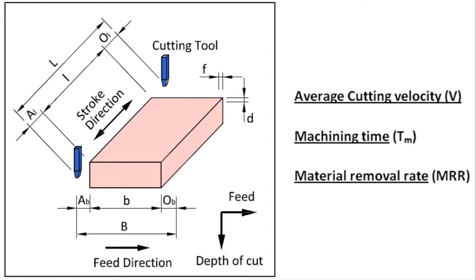The width of the workpiece is shown as small letter b, and the total distance through which the workpiece moves in the feed direction is capital letter B — the sum of approach in the width direction, width of the workpiece, and over travel in the width direction. The direction of feed is always perpendicular to the direction of stroke and also perpendicular to the direction of depth of cut. The stroke direction, feed direction, and depth of cut are three mutually perpendicular parameters. Depth of cut (small d) is the distance through which the cutting tool penetrates into the workpiece, and feed (small f) is how much distance the workpiece moves in the feed direction per one full stroke.